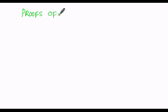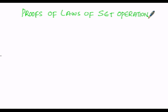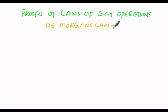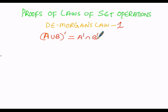We are going to prove the laws of set operations, specifically De Morgan's Laws. There are two laws under De Morgan's Laws. We are going to prove the first one: De Morgan's Law number one, which states that (A union B) whole complement is equal to A complement intersection B complement.